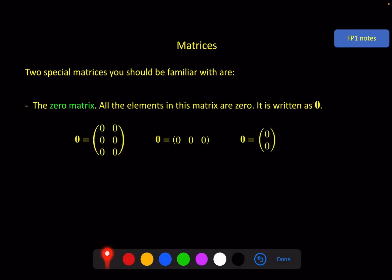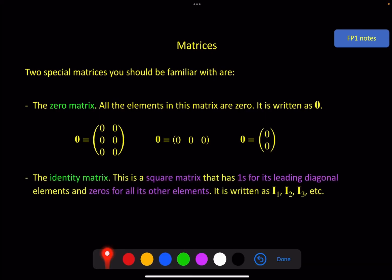The second special matrix you need to be aware of is called the identity matrix. And this has to be a square matrix. And it will have ones on its leading diagonal. That means from the top left down to the bottom right. And everywhere else, it will have zeros. And because this is specifically for square matrices, we write it as I₁, I₂, I₃, etc.